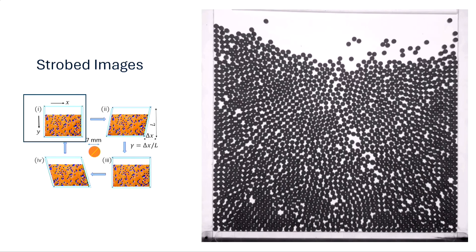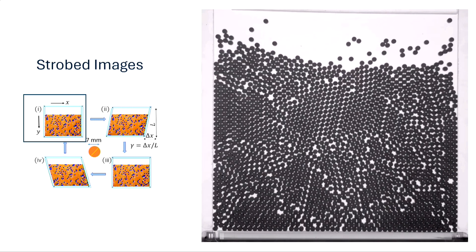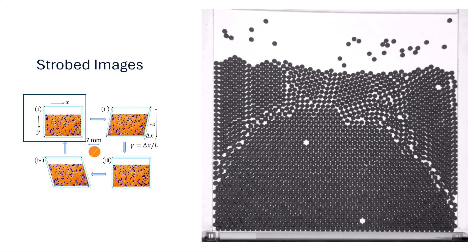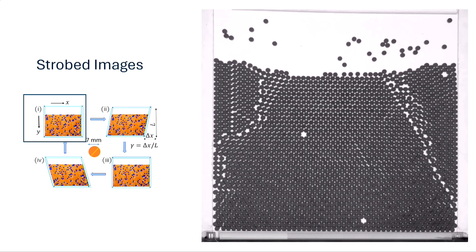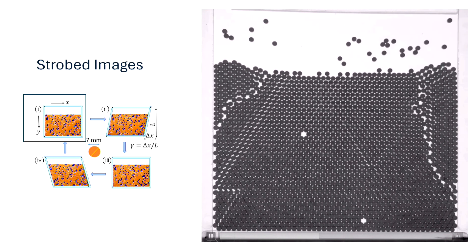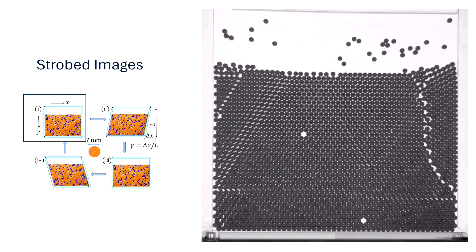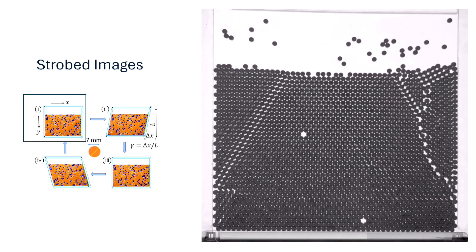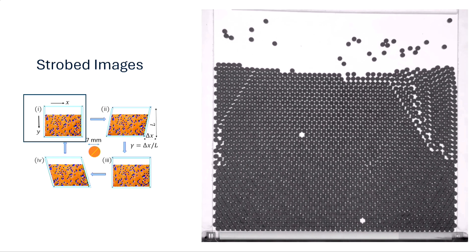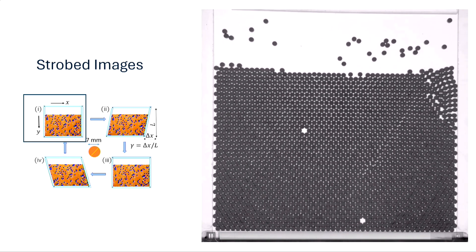I'll show you strobed images: I start here, go back, then repeat. For a particular critical density, choosing the right shaking amplitude, you start with a random configuration and slowly anneal out all the defects, ending up with one nice crystalline state.